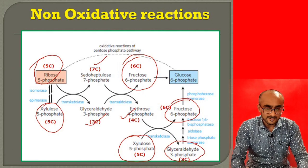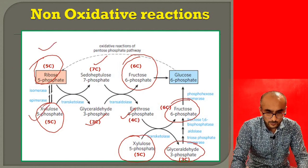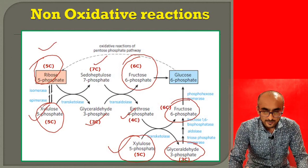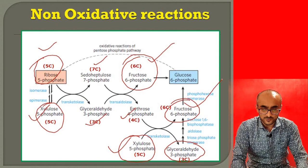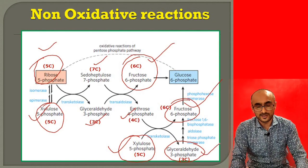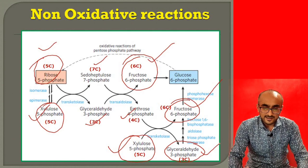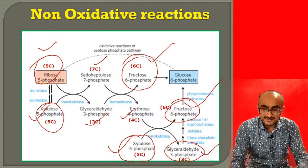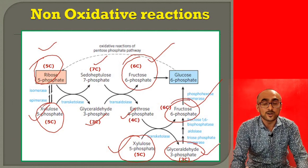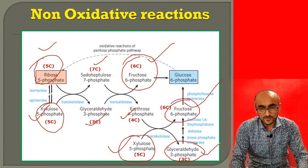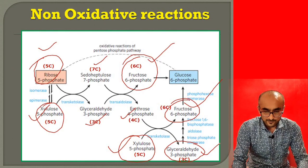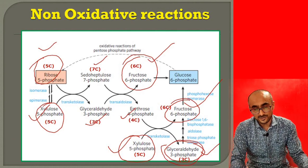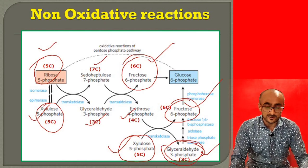In one cycle, three pentose sugars react with one another to give rise to two molecules of fructose-6-phosphate and one molecule of glyceraldehyde-3-phosphate. Fructose-6-phosphate can be converted back to glucose-6-phosphate since both are hexose sugars. However, glyceraldehyde-3-phosphate is a three-carbon sugar, so to form a hexose sugar you need two molecules of glyceraldehyde-3-phosphate — that is why two cycles proceed together, and the glyceraldehyde-3-phosphate from one cycle combines with that of another to form one hexose sugar.